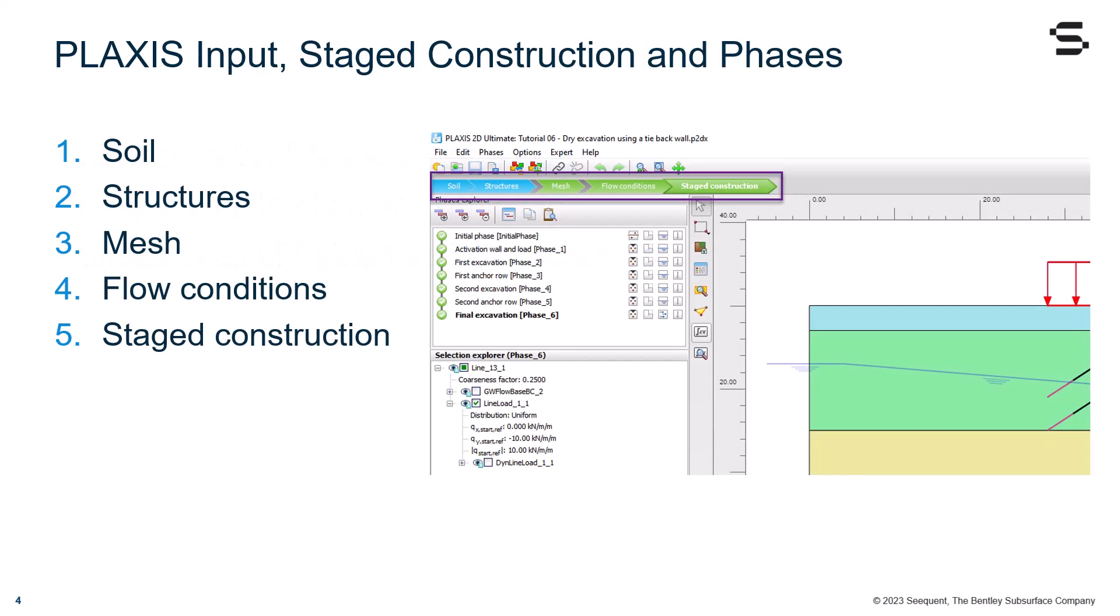In Plaxis we offer a full workflow when creating a geotechnical model. One starts at defining the soil conditions, adds structures, generates a finite element mesh, and adds or adjusts the flow conditions while creating the staged construction phases.